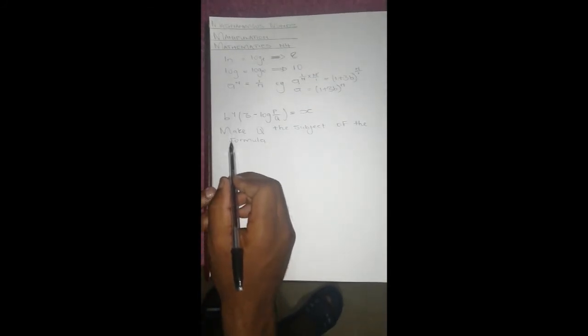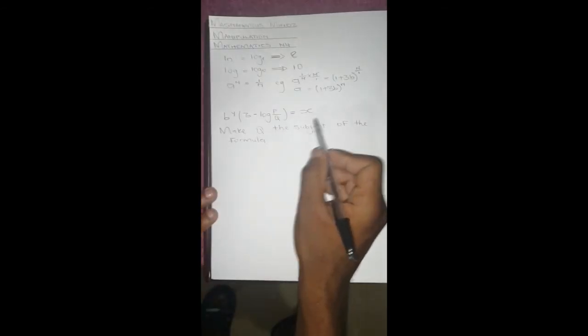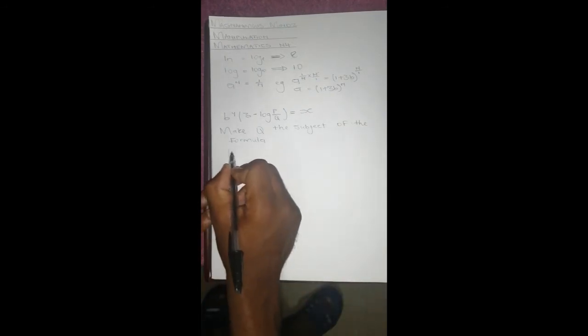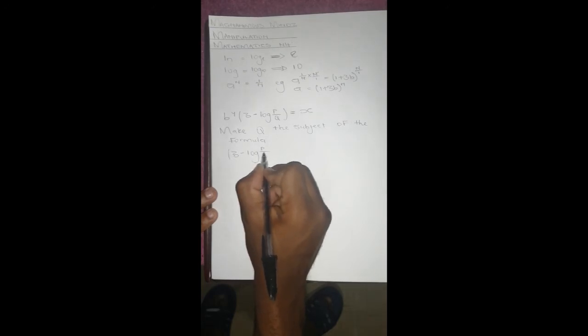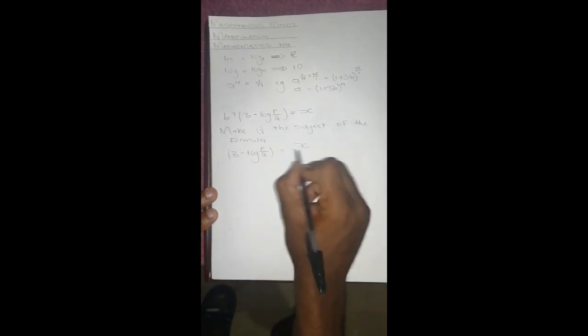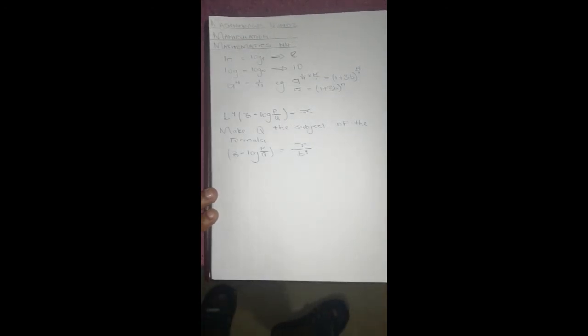So to do that, we'll first divide both sides by b to the power y. Then if we divide this side by b to the power y, we are left with just this. This side will be left with x over b^y, so it's going to be 3 minus log p over q equals to x over b to the power y. And we are done with that.